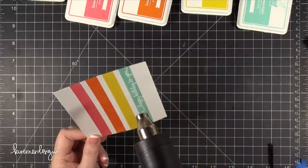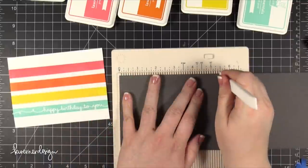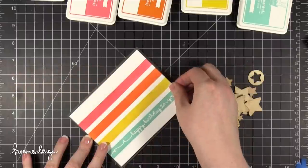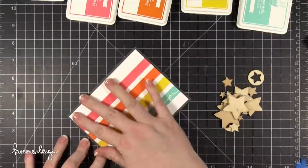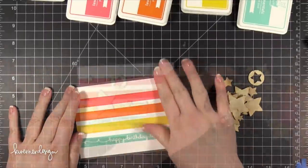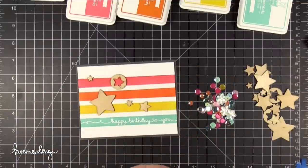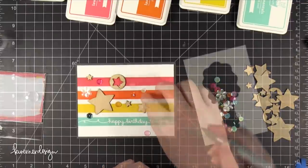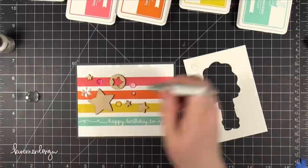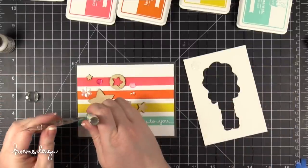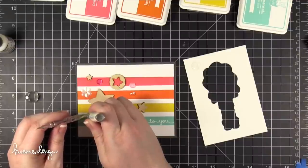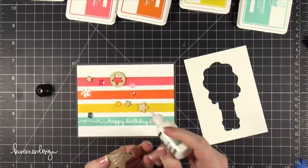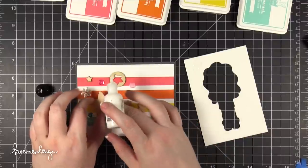I hit that with my heat tool until everything was melted and then I prepped my card base. The card stock I'm using today is Simon Says Stamp Slate card stock, and I created a side folding landscape card. I adhered that piece to the card base using some foam adhesive, and then I'm using some star wood veneers that are also from the release, and a pack of sequins from their Hello Sunshine release from a while back. I used some Ranger multi-medium matte as an adhesive to adhere all of the sequins and also the wood veneer pieces.